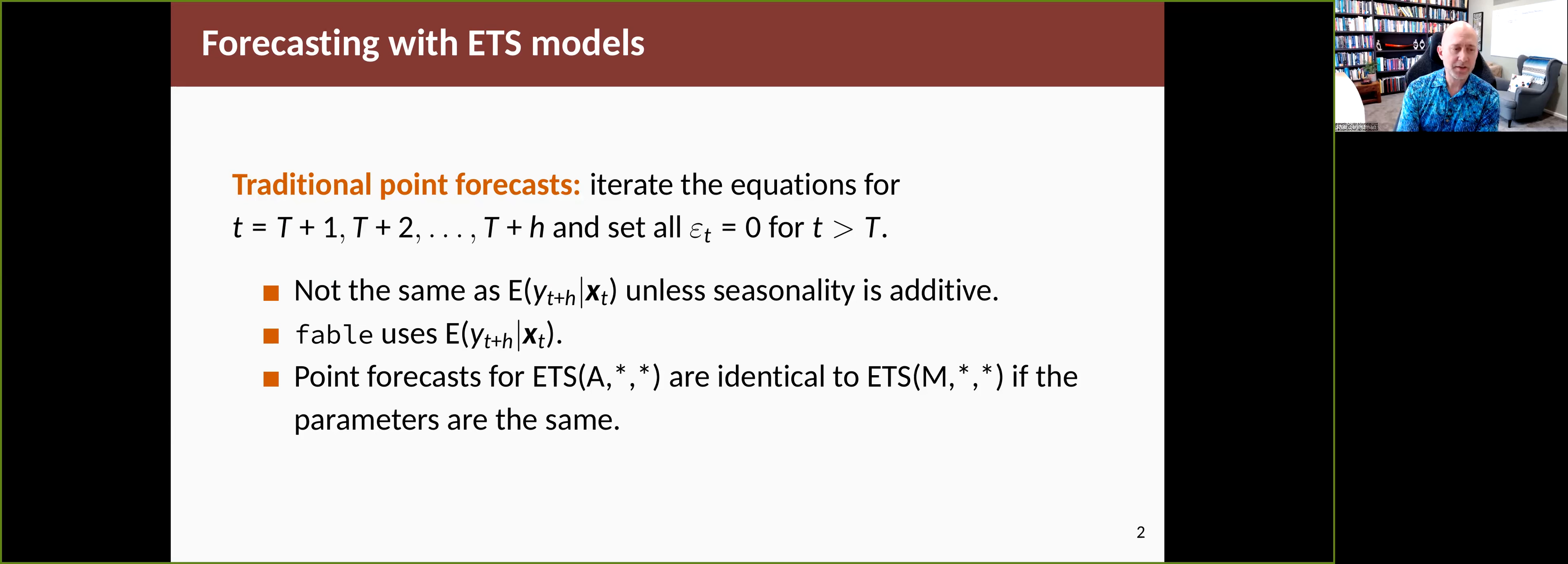It's worth noting that point forecasts for ETS models will be the same if you've got additive and multiplicative errors when everything else is the same—the same trend, the same seasonality, and the same parameters: alpha, beta, gamma, L0, B0, and seasonal states. If all of those are the same and the only difference is whether the error is multiplicative or additive, you'll end up with the same point forecasts. Otherwise, you'll have different point forecasts.